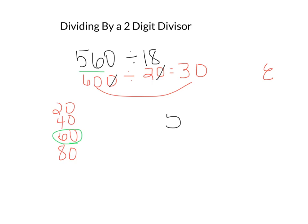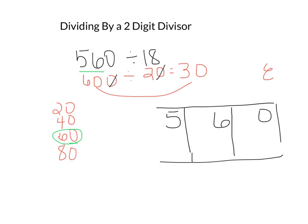All right, so now we're ready to do the box method. Remember, we're going to put each of our digits of our dividend in three separate boxes, making sure to put our lines for our box pretty close to the digits like this, and bring it down like this and go all the way across. Your divisor goes on the outside.